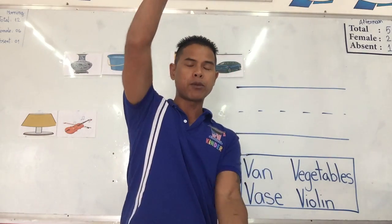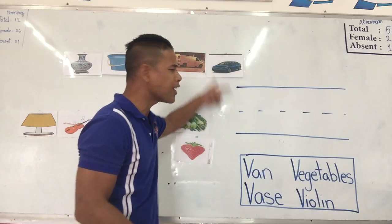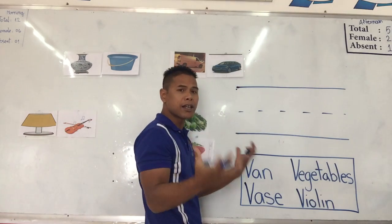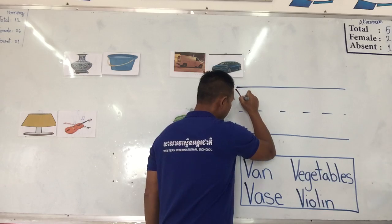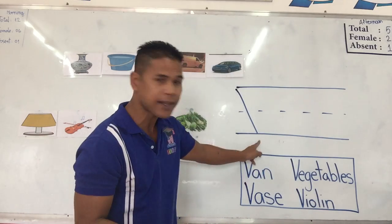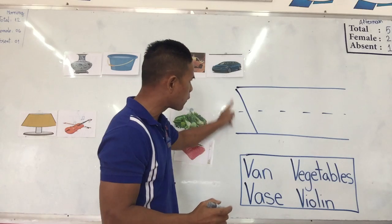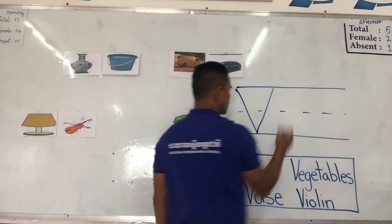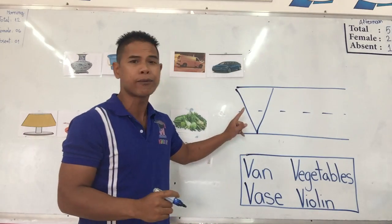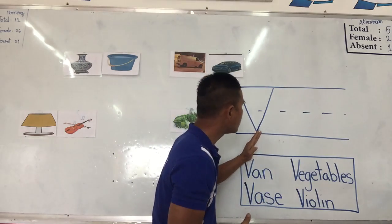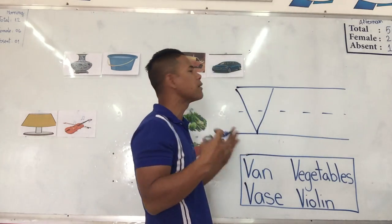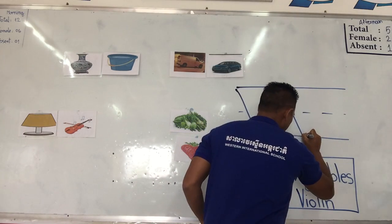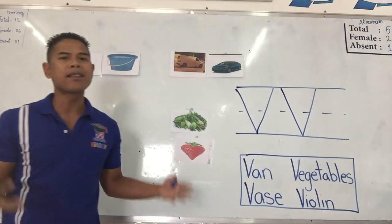Which line do we use for the big V? Yes, we use all three lines. So the big V — we start from the top line, just like the little V. We start from the top line, slant down. We have to slant, not straight up and down. Slant down to the bottom line and slant back up to the top line. We have the big V. One more time: from the top line, slant down to the bottom line and slant up to the top line. We have the big V.